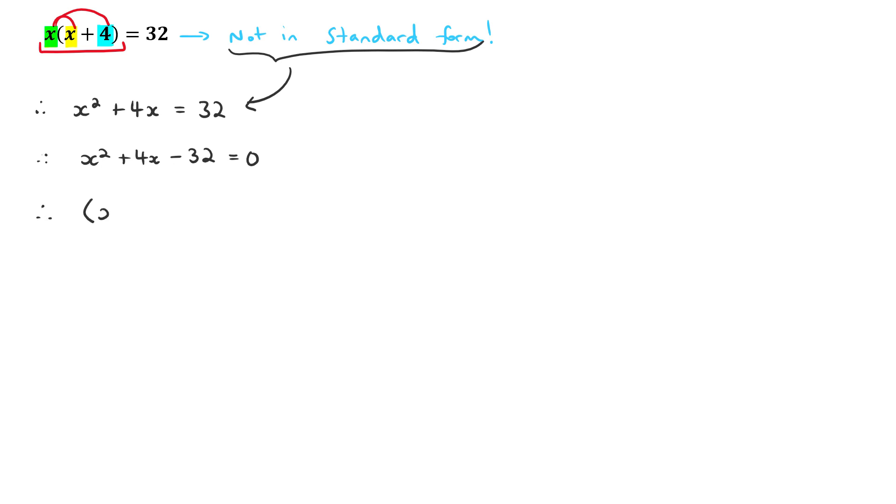The factors here would be x plus 8, x minus 4 equals zero. And the way I did that was I looked at the 32. And I know that the factors of 32, one set of them is 8 and 4.